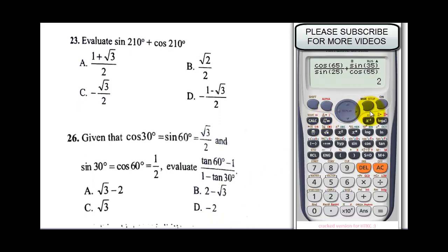The next question says: evaluate sine 210° plus cos 210°. So just add it up: sine 210 with the brackets, plus cos 210. You don't need to start looking for the special angles; it will solve it for you. Our final answer is minus 1 plus root 3 over 2.